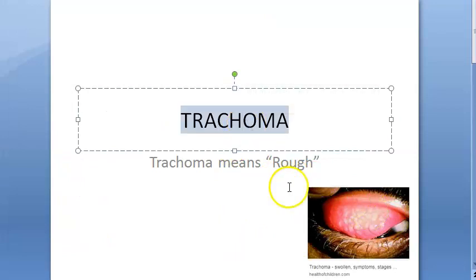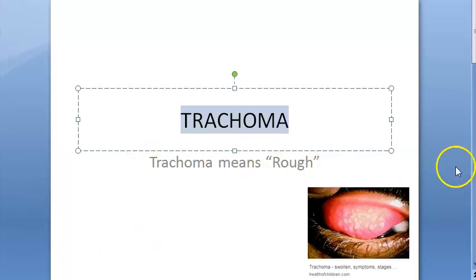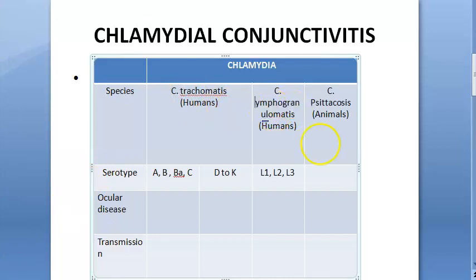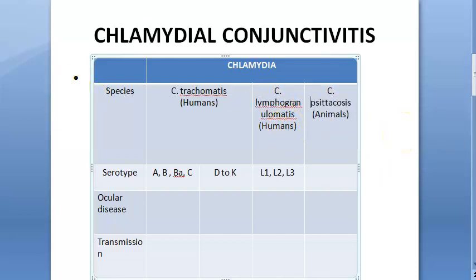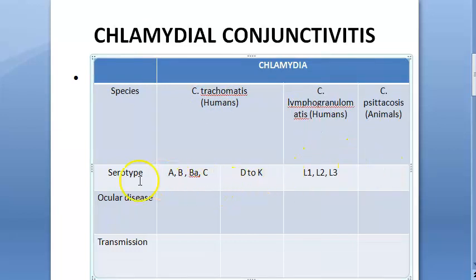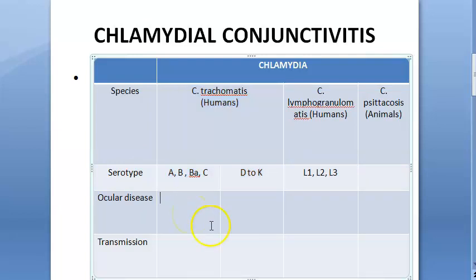The word trachoma actually means 'rough' in Greek, because of the rough appearance. In Chlamydia bacteria there are many species: Chlamydia trachomatis, Chlamydia lymphogranulomatis, and Chlamydia psittacosis. Under Chlamydia trachomatis, serotypes A, B, Ba, and C lead to hyperendemic trachoma. The word trachoma is used only for this group.